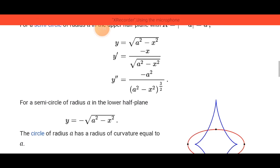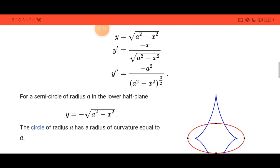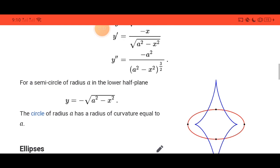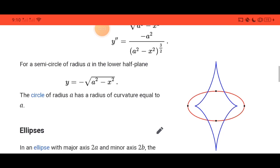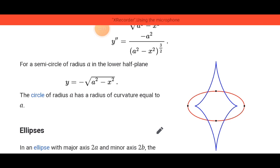For a semi-circle of radius a in the lower half plane, y is equal to negative square root of a squared minus x squared. The circle of radius a has a radius of curvature equal to a.